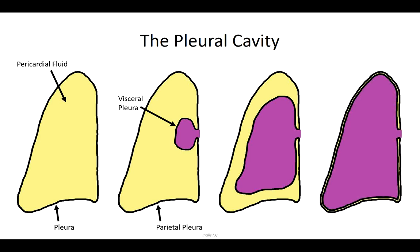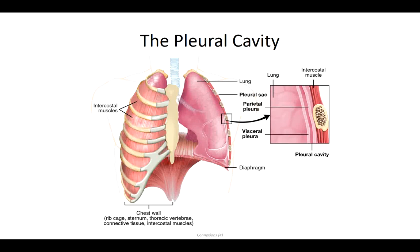At the end of lung development, the parietal and visceral pleural layers are in near direct contact, with only a very small amount of serous fluid remaining to separate the two surfaces. Because of this arrangement, the pleural cavity surrounding the outer surface of the lungs is considered to be more or less a potential space. As we'll see later in this presentation, there are situations in which this potential space can be compromised, which can result in some very serious medical emergencies.